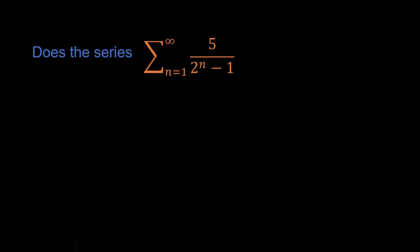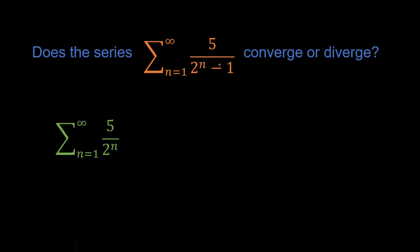Question for you: does the series from n equals 1 to infinity of 5 over 2 to the n minus 1 converge or diverge? That is the question. If you look at this you might say, hey, this looks kind of like a geometric series — kind of like the geometric series where we just don't have this minus 1 here.